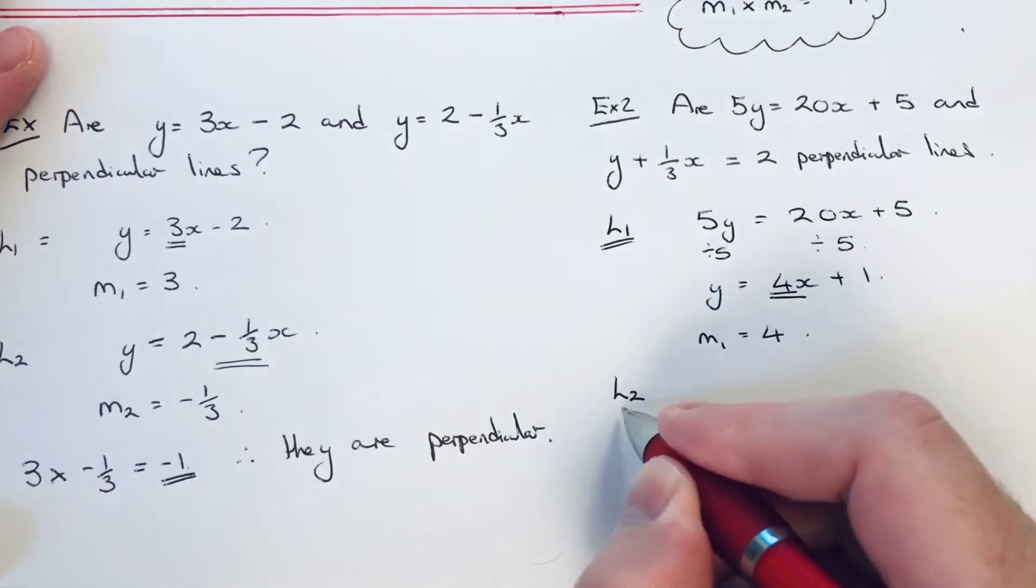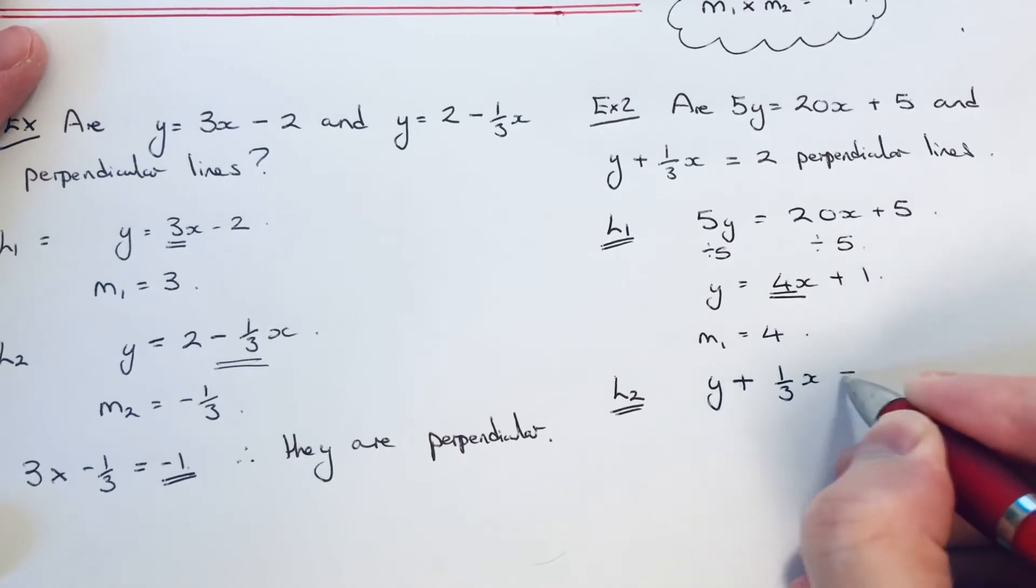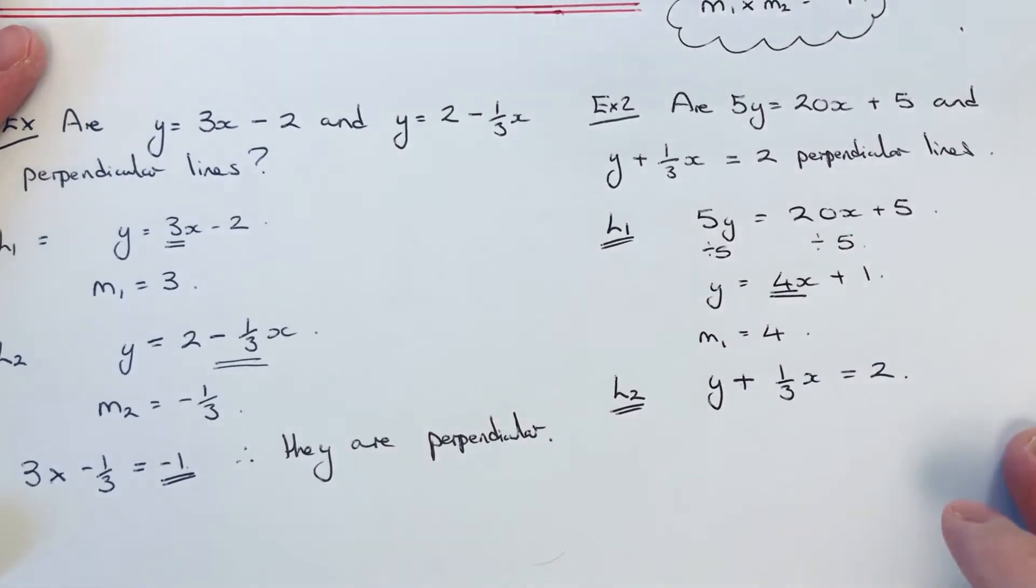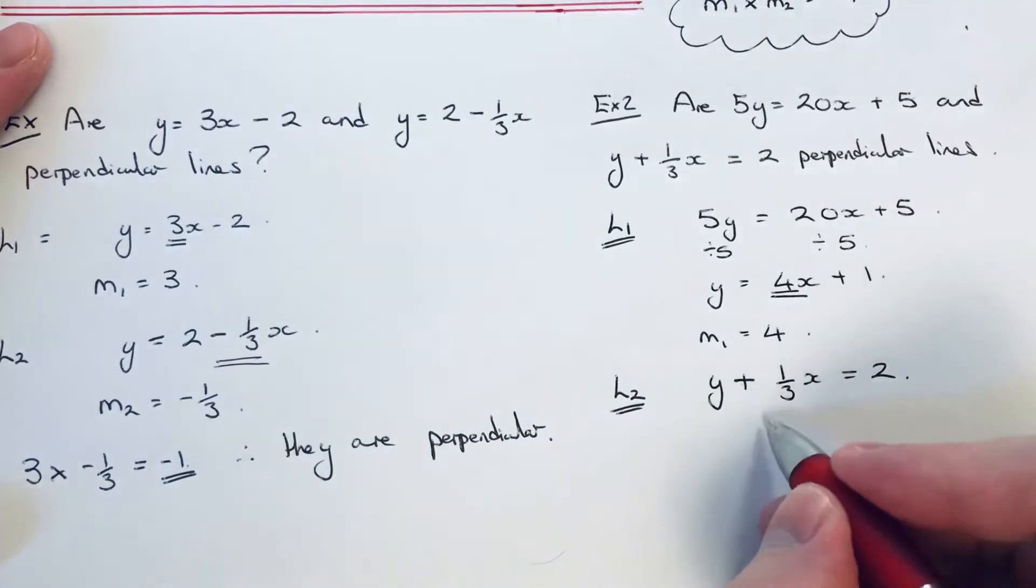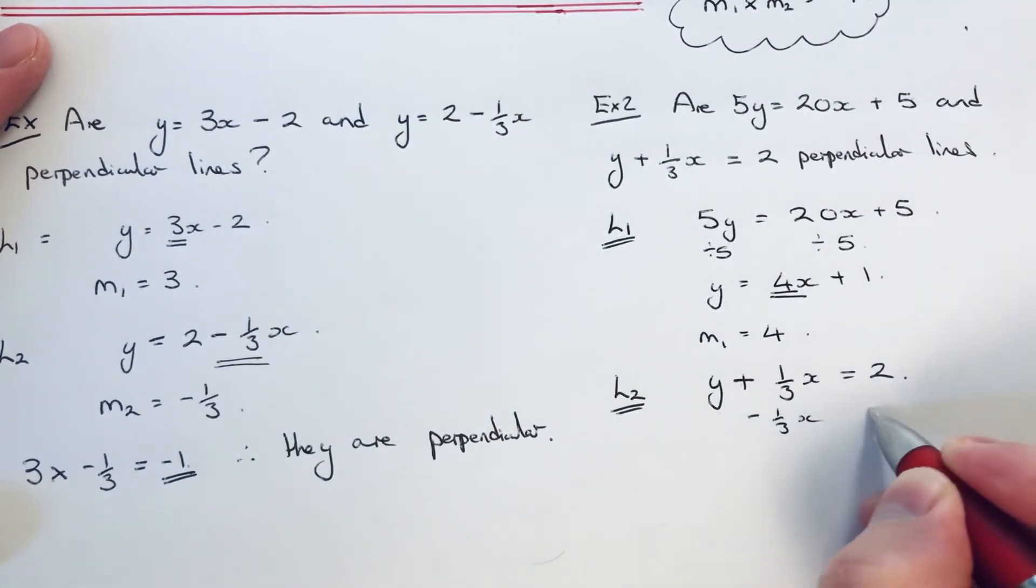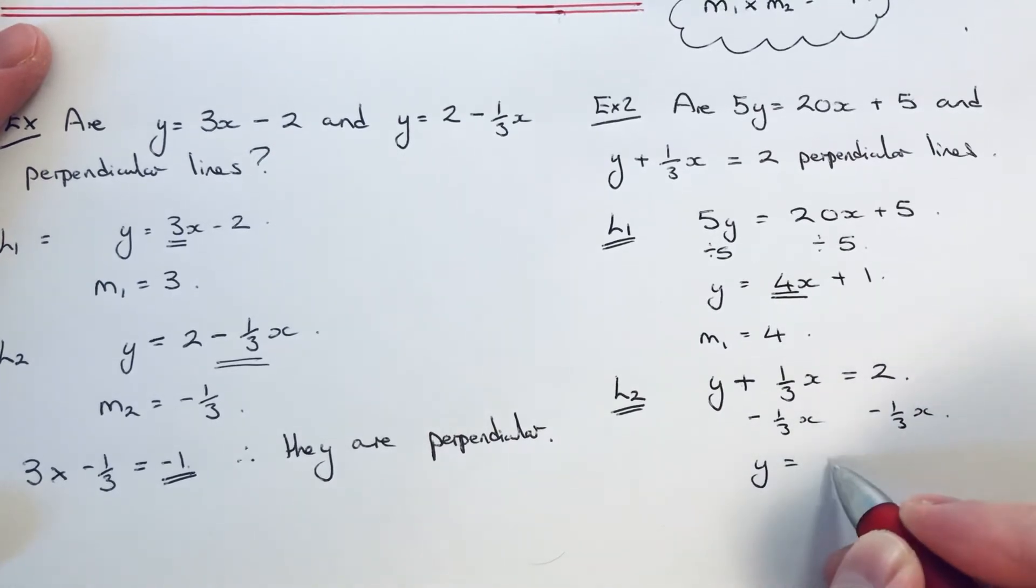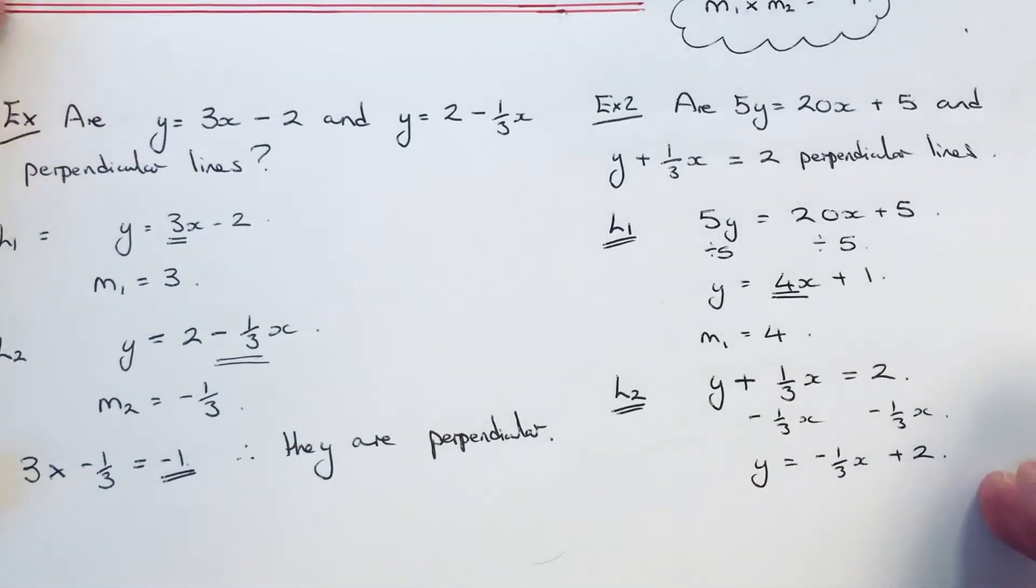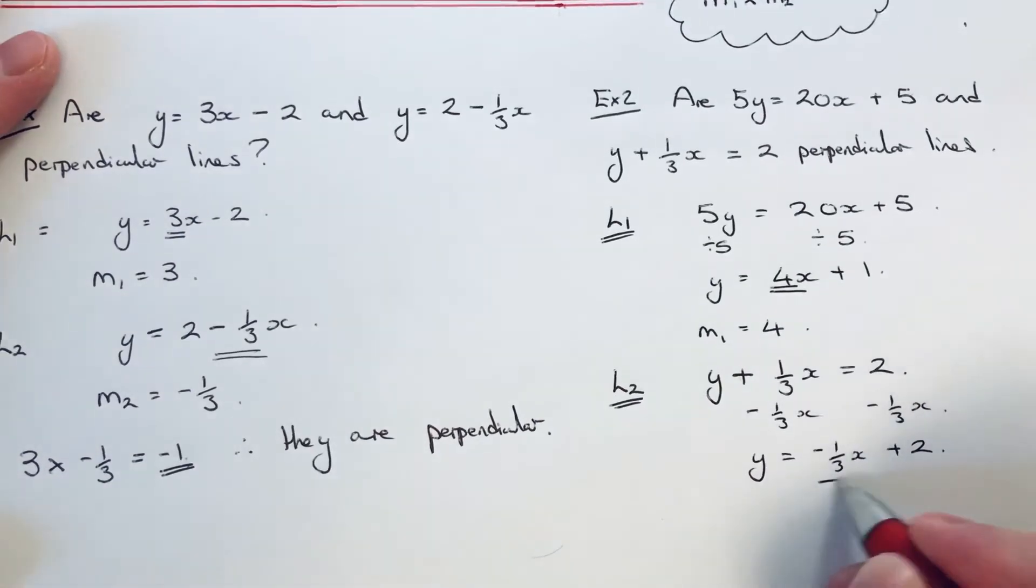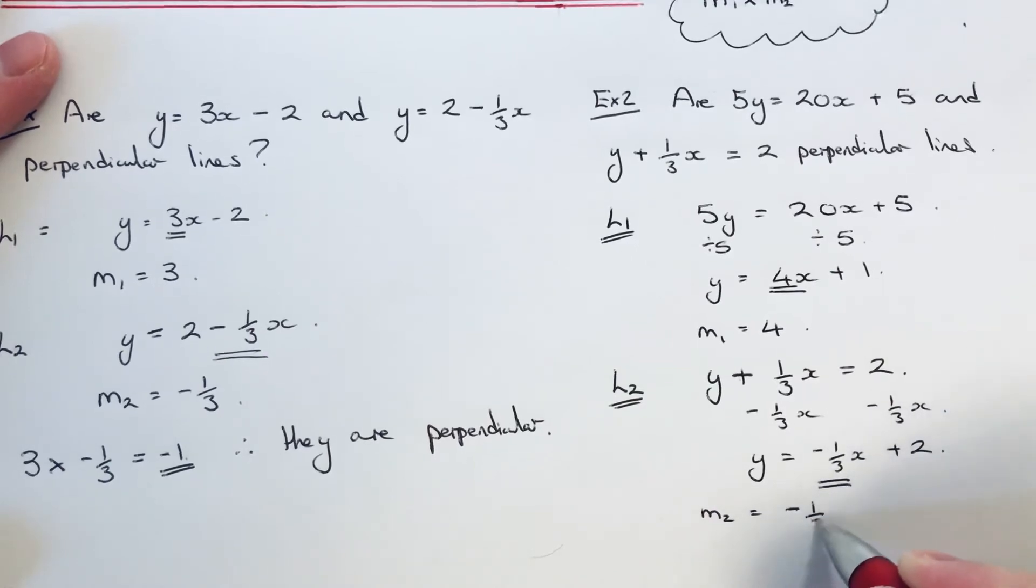So let's have a look at the second line. So our second line is y+⅓x=2. So again, we just need to make y the subject by taking a third x off both sides. So this will give us y=-⅓x+2. So our gradient of our second line is minus one third.